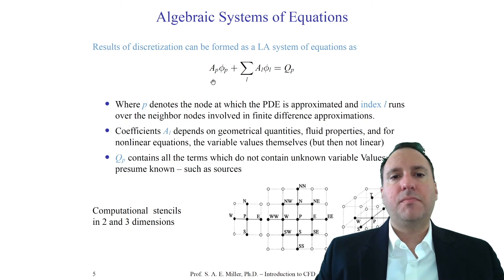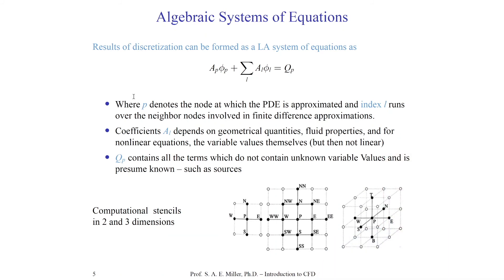We might have a_p phi_p plus a summation over l of a_l phi_l equals q_p. Here, p denotes the nodes at which the PDE is approximated. The index l runs over the neighboring nodes in the finite difference approximation. The coefficients a_l depend on geometric quantities, fluid properties, and possibly nonlinear variables. Phi is our unknown solution vector. q_p contains all terms which do not contain unknown variables — much like the right-hand side B in ax equals b. We presume we know all sources q and all coefficients a. The number of unknowns and equations must be equal; if not, we cannot find a solution.